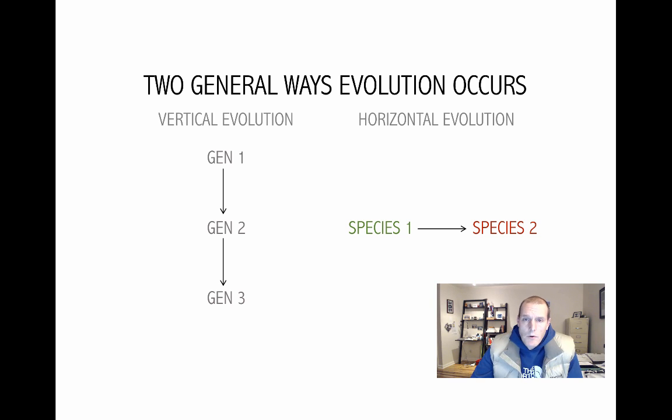The first one is called vertical evolution. This is where you and I pass our genes to our children. And our children pass the genes on to their children. And with each passing generation, the frequency of the gene variants, which are called alleles, changes. And once enough changes occur and populations become isolated, it's possible that new species may form. So there's vertical evolution.